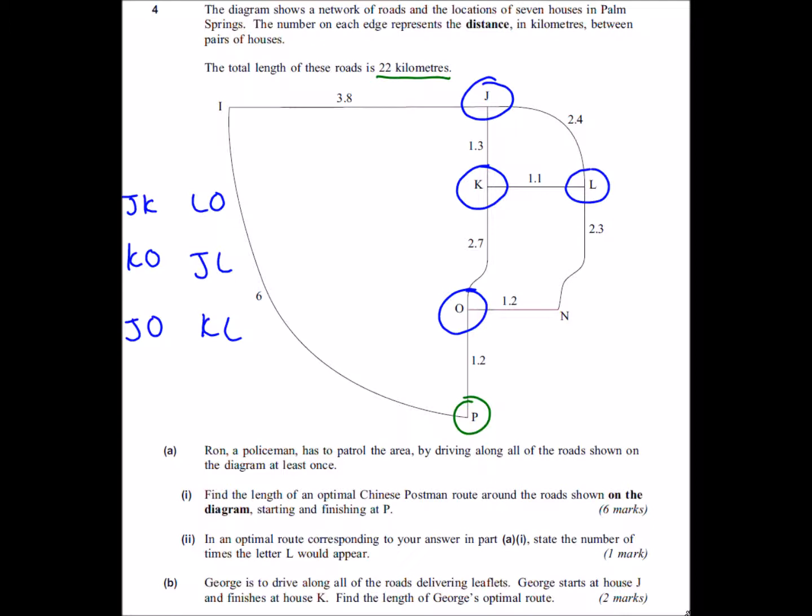Now I just need to find the distances. Be careful, we're always looking for the shortest distance and it's not always immediately obvious what the shortest distance is. Between J and K the distance is 1.3, between L and O the distance is, well we could go L to K and down, that would be 3.8.